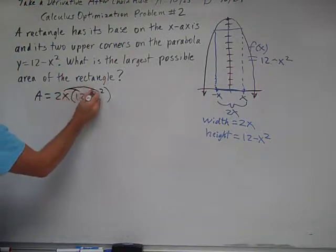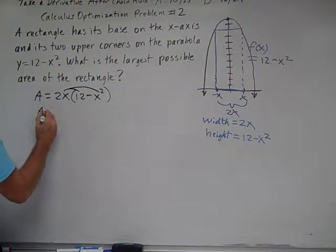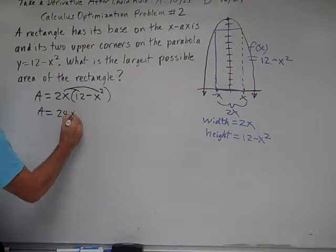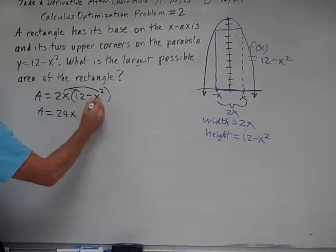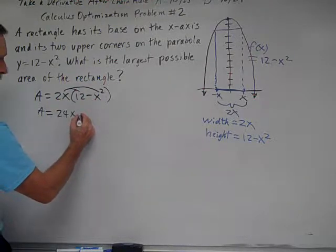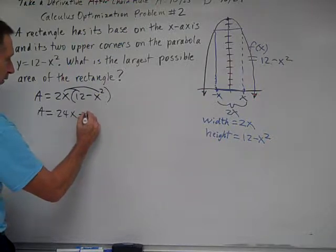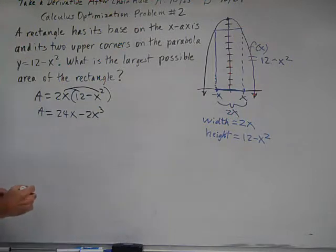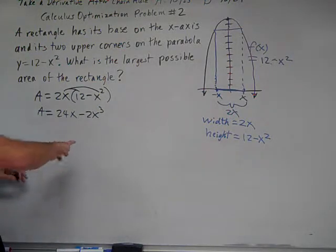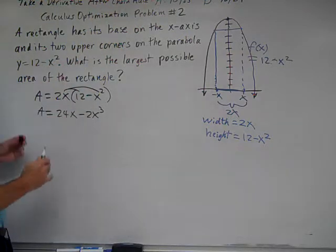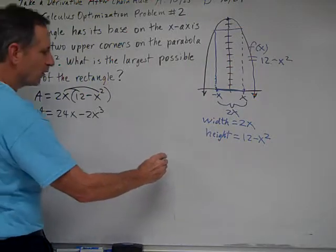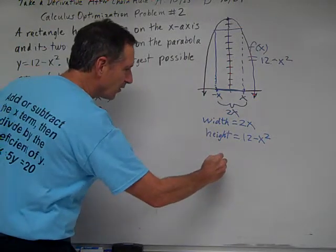And so using the distributive property of algebra, we have the area is going to be equal to 24x minus 2x cubed. Now, we're going to try to find the maximum area of this rectangle, and to do so, we're going to look for a horizontal tangent line.